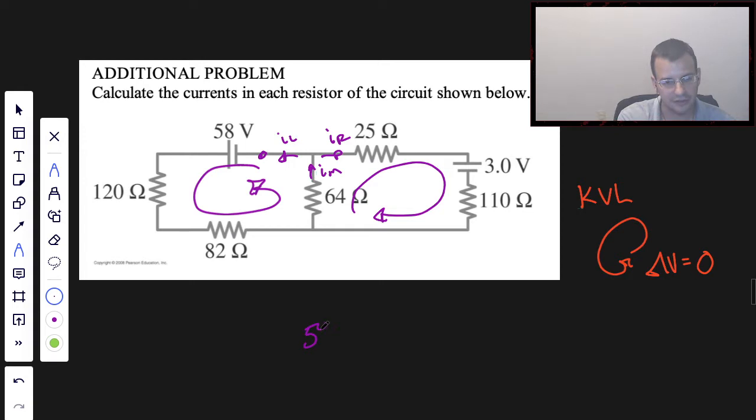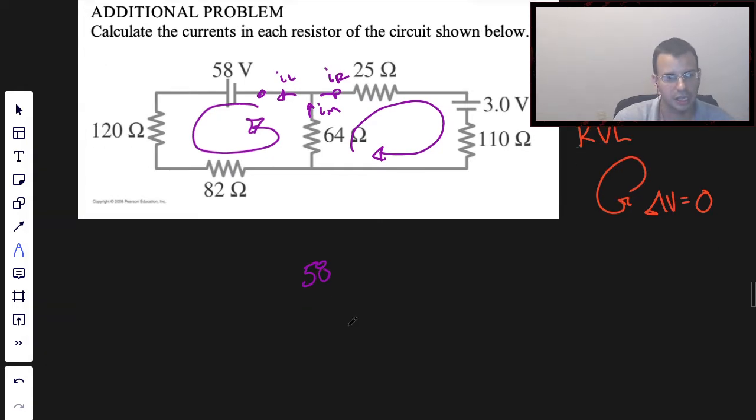And so starting at this point, going around this way, we have 58 minus 120 I left minus 82 also I left minus 64 I middle, and that's going to equal zero.